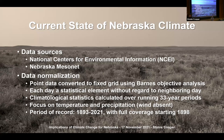Climatological statistics are calculated over a running 33-year period instead of a 30-year period, and I'll explain why. The focus is on temperature and precipitation. I don't do wind, because wind on a daily scale is almost irrelevant — you really need to look at wind on an hourly scale. The period of record that I have that's viable is 1893 to 2021, with full coverage of the state starting in 1898.